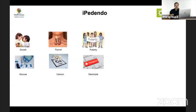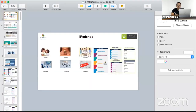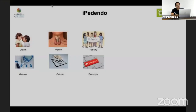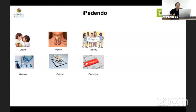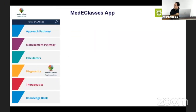The concept of IP Dendo has been there for quite some time because we have been trying to solve problems in an easy fashion so that we are able to identify and evaluate complicated pediatric endocrine problems appropriately. It includes a number of approach pathways, manage pathways, calculators, diagnostics, therapeutics and knowledge management.